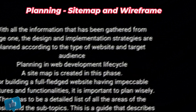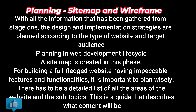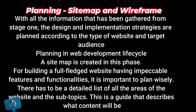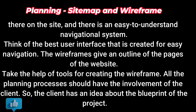Moving to stage two — planning, system setup, and wireframe — with all the information gathered from stage one, the design and implementation strategies are planned according to the type of website and target audience. A site map is created in this phase for building a full-fledged website with impeccable features and functionalities. There has to be a detailed list of all the areas of the website and the subtopics, serving as a guide describing what content will be on the site with an easy-to-understand navigational system. Wireframes give an outline of the pages of the website.